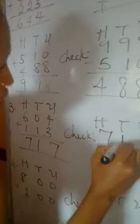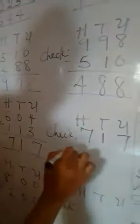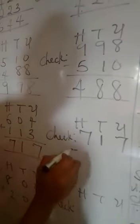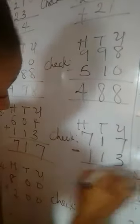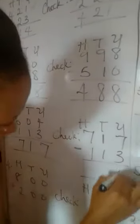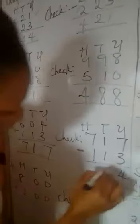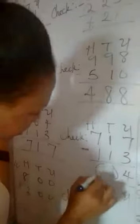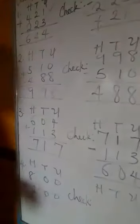Now to check, I will now do 770 minus - remember to check in addition, you subtract - minus any of the numbers, 113. 7 minus 3 is 4, 1 minus 1 is 0, 7 minus 1 is 6. So I have gotten back my answer.